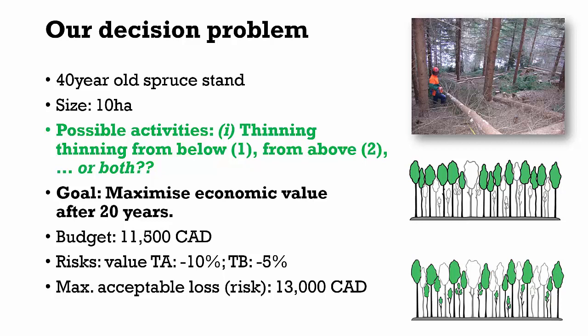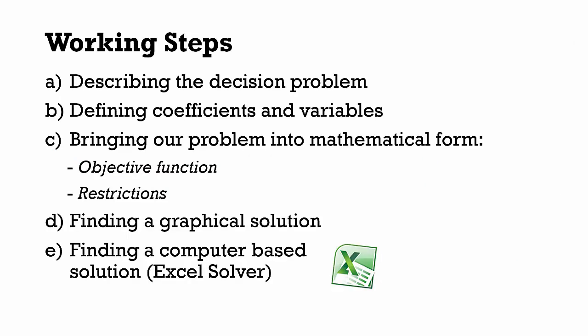Keep in mind that we plan to bring our decision problem into mathematical form. What could be the objective function? And what are our restrictions? Let's have a look at the working steps necessary to find a graphical solution using linear optimization. First we have to describe the decision problem. Then we will define coefficients and variables to finally bring our problem into mathematical form. In step D we can start finding a graphical solution, and later on we will learn how to find a computer-based solution using the Excel solver.